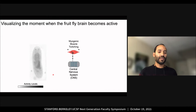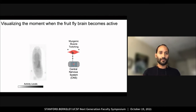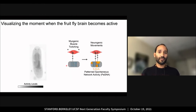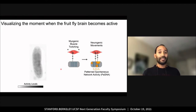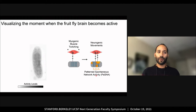Early on, you see movements, the product of myogenic muscle twitching, similar to a fetus kicking. These movements originate within the muscles, independent of neural activity. You then see surges of spontaneous activity within the nervous system that generate neurogenic movements. This is when the CNS transitions from inactive to active. I refer to this period as patterned spontaneous network activity, or PASNA.